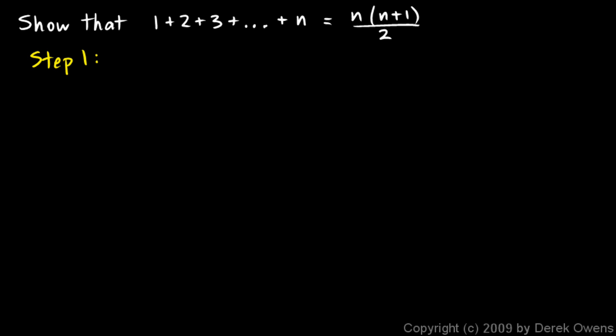Step one, we're going to show that this works for any number of our choosing. So I'm just going to take a simple one, n equals 1. If n equals 1, the left side of this is just 1, and then the right side is 1 times 1 plus 1 over 2, which is 2 over 2. So that works, it works if n equals 1.